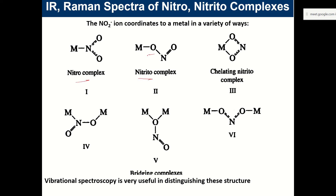Now we discuss nitro and nitrito complexes - an important ambidentate ligand that can donate electrons either through nitrogen or through oxygen. There are multiple types of complexes: nitro (N-bonded), nitrito (O-bonded), chelating nitrito, and bridging modes. In a bridging mode the NO₂ acts as a bridge between two metals - one metal can connect through N and the other through O, or both can connect through oxygen.